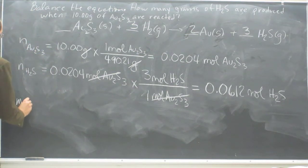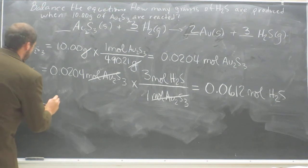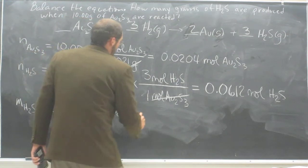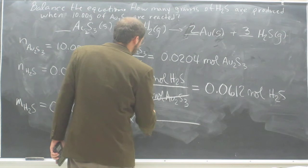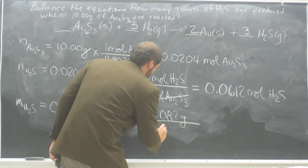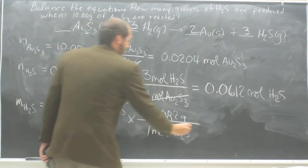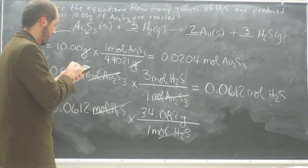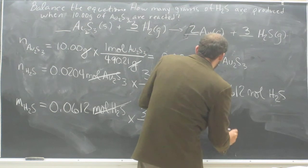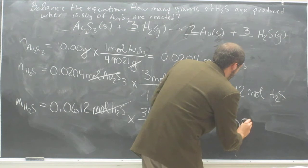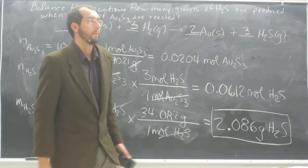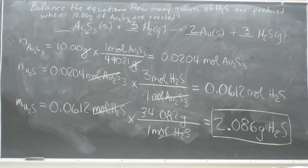So the mass of H2S, then, would be 0.0612 moles of H2S. So the molecular weight, 34.082 grams for one mole. So multiply that by 34. I got 2.086 grams of H2S. So it's the same four steps every time.